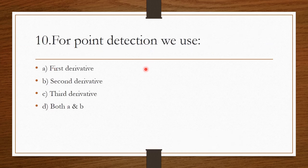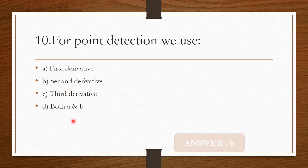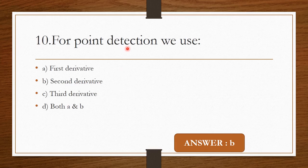Question 9: For point detection we use — First derivative, second derivative, third derivative, or both A and B. The correct answer is second derivative. Always remember, for point detection we use the second derivative.